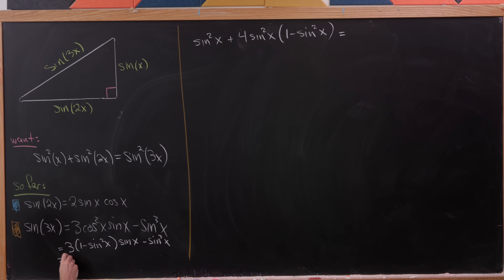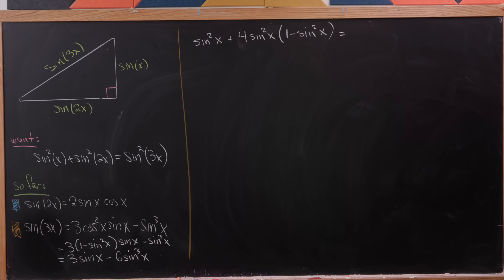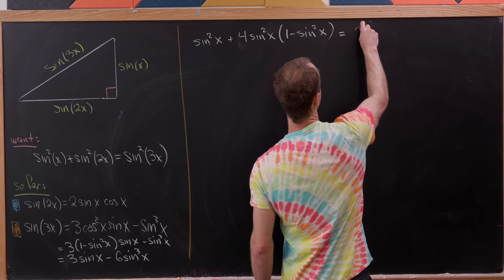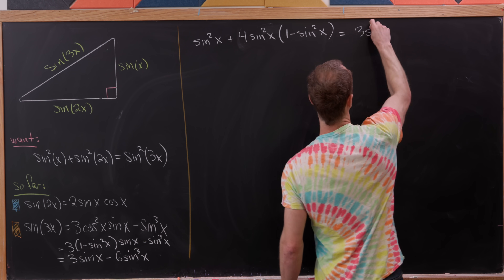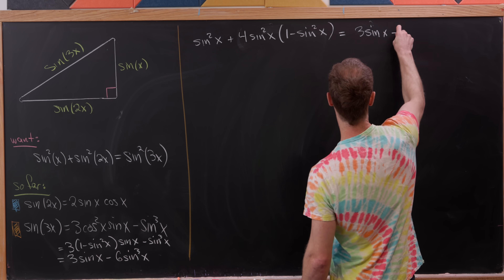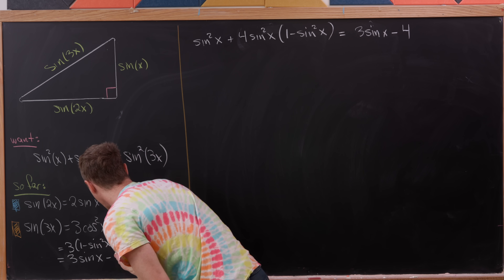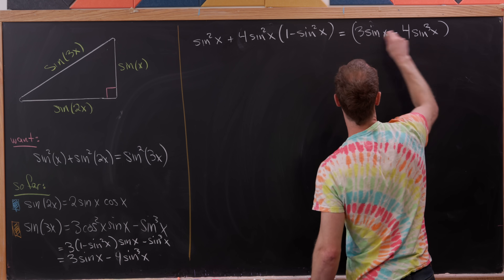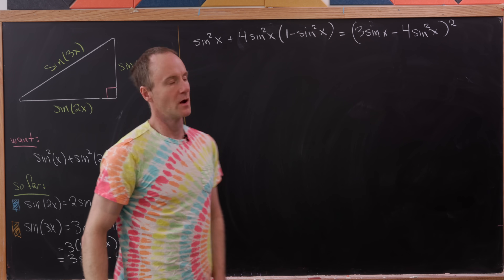Expanding the right-hand side gives 3 sine x minus 4 sine cubed of x — that's what we have to square. Now let's expand the left-hand side. We have a sine squared term and a 4 times sine squared term, giving 5 sine squared x minus 4 sine to the fourth x. Multiplying out the right-hand side gives 9 sine squared x, minus 24 sine to the fourth x, plus 16 sine to the sixth x.